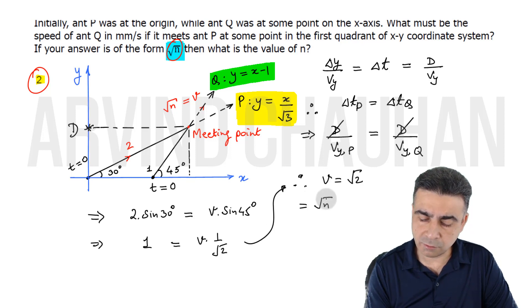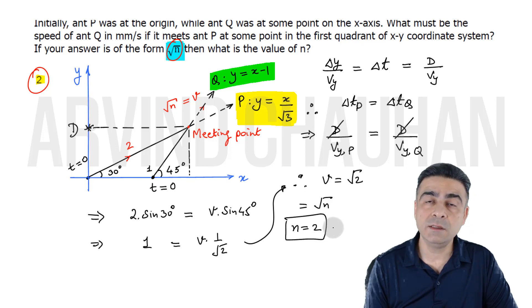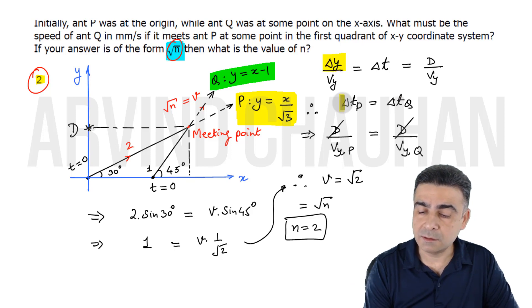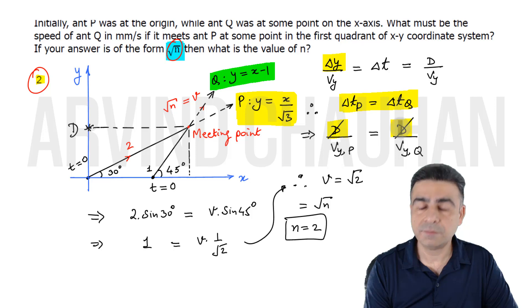But this was also equal to square root of n, so n must equal 2. That is the answer. It's a very straightforward problem, but if you use the trick of equating the y-coordinates, then that's the fastest possible solution.